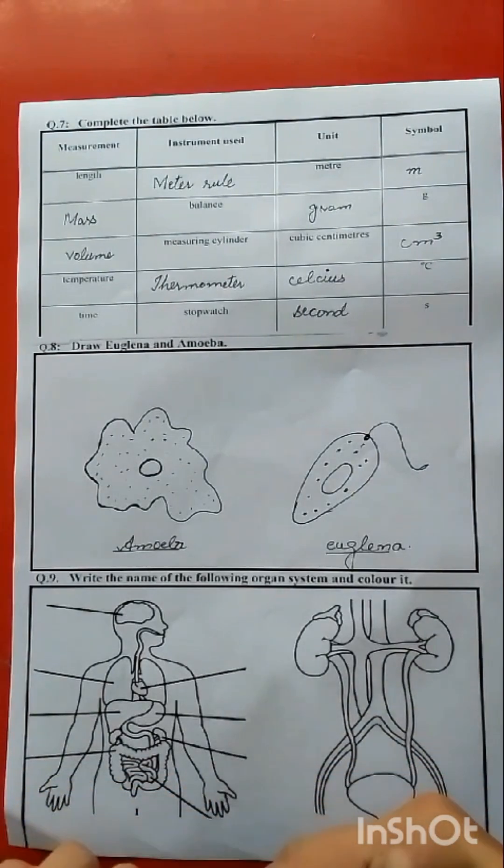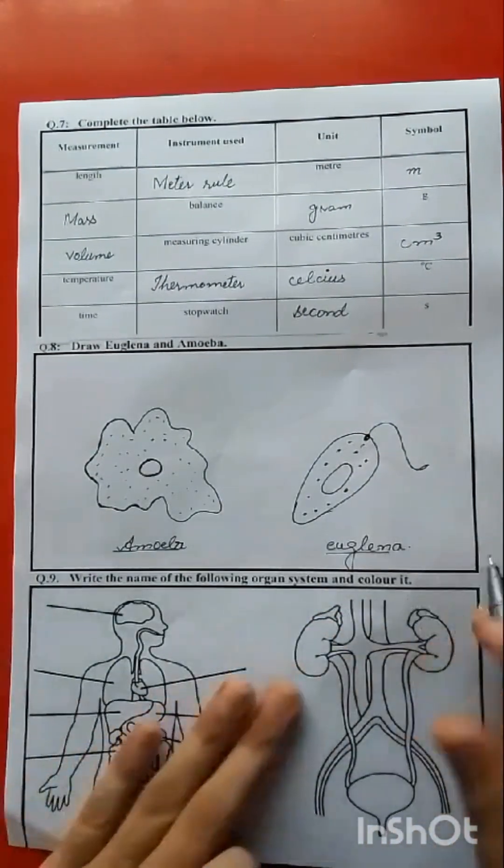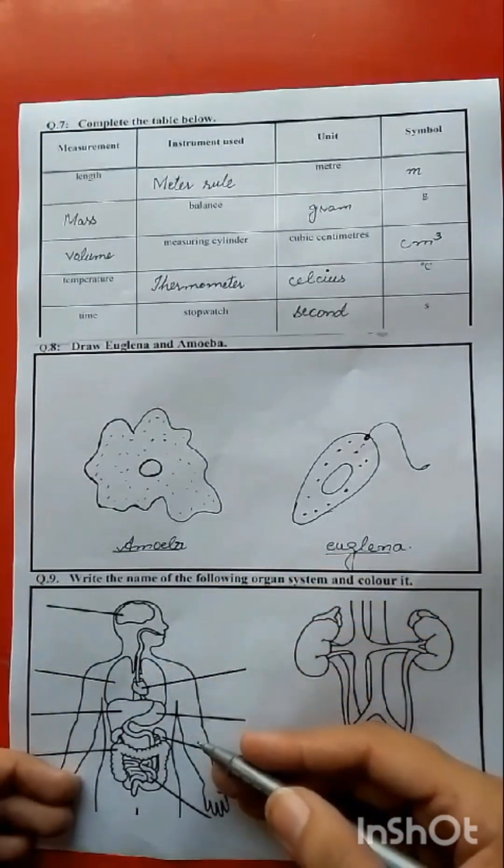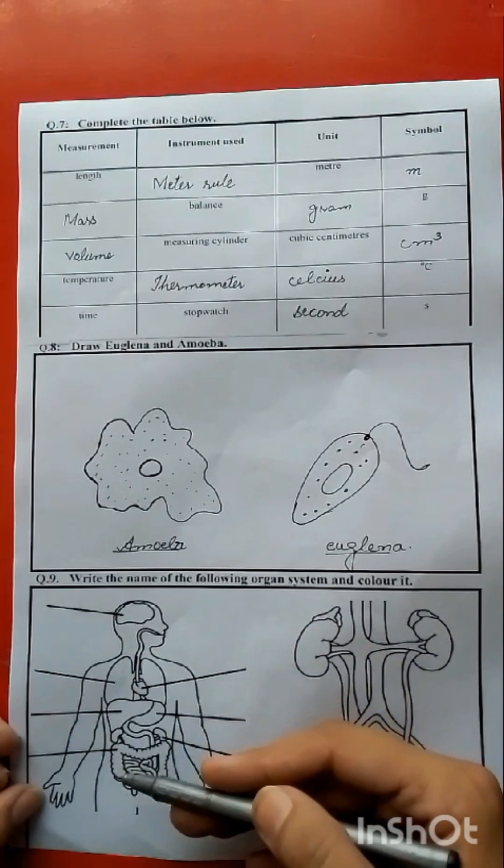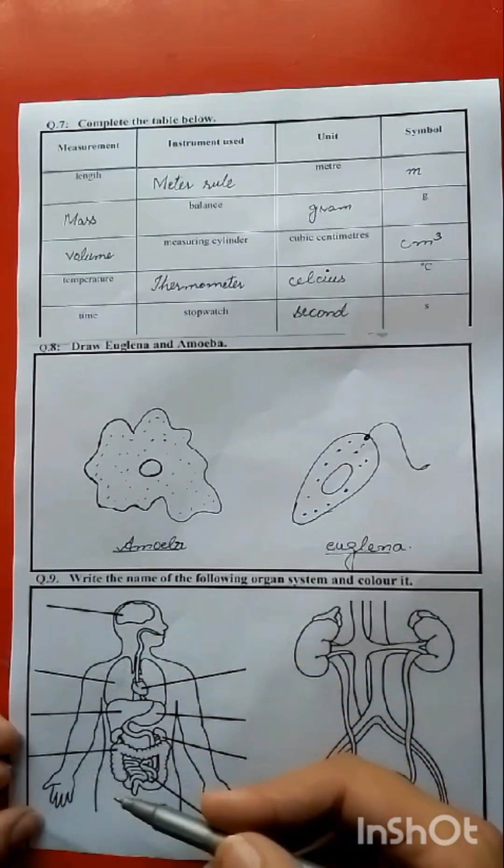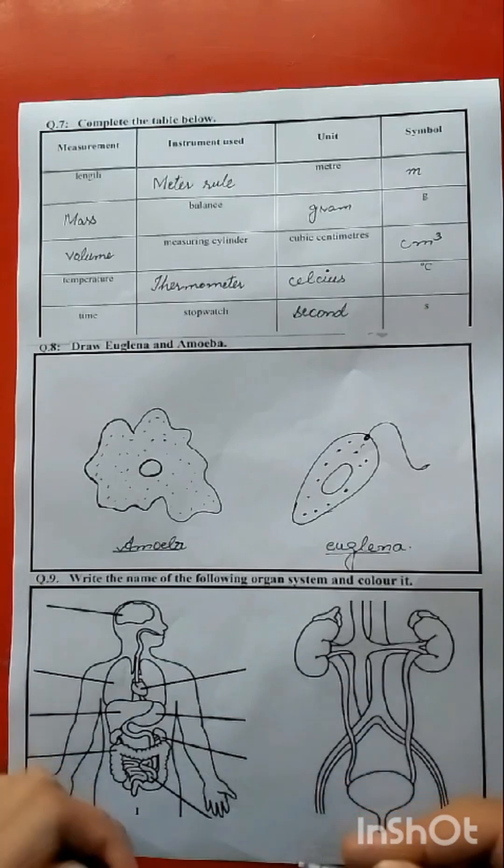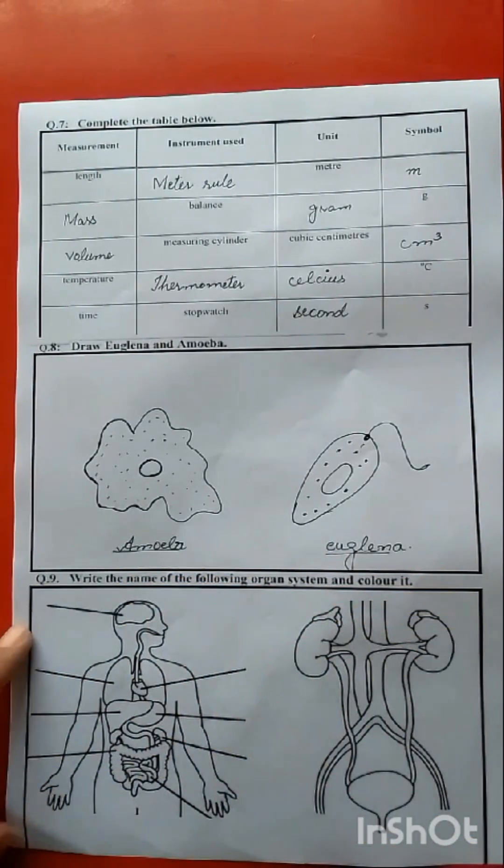Question number 9: Write the names of the following organ system and color it. Here there is a system, here there are labeling arrows. Here you have to mention the organs, what the name is, and then color it. This is the first one, we will see.